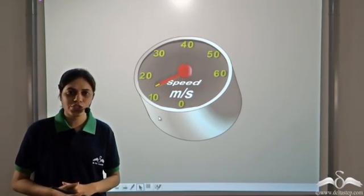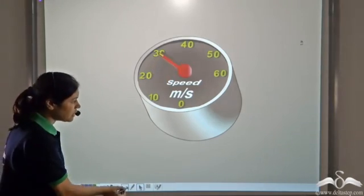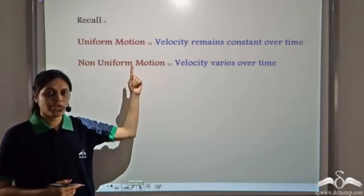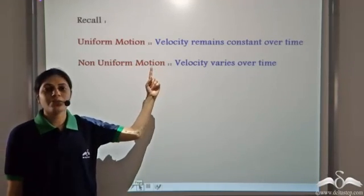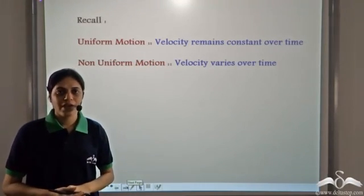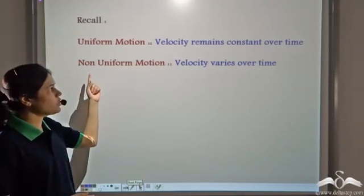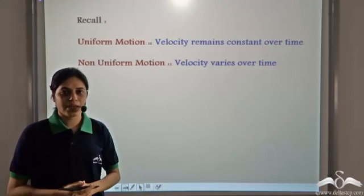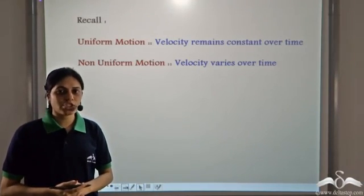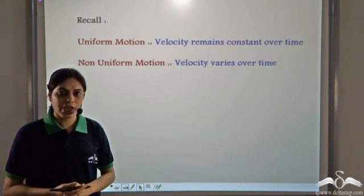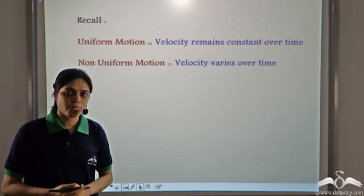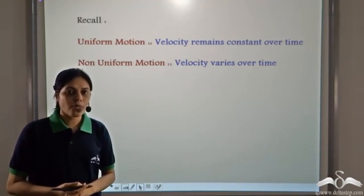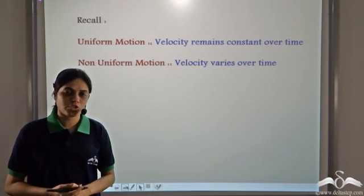It keeps on changing. We have already learnt that a body is said to be in uniform motion if its velocity remains constant over time. And a body is said to be in non-uniform motion if its velocity varies with time. Most of the situations which we come across in real life are of non-uniform motion — the velocity of objects does not remain constant over time.